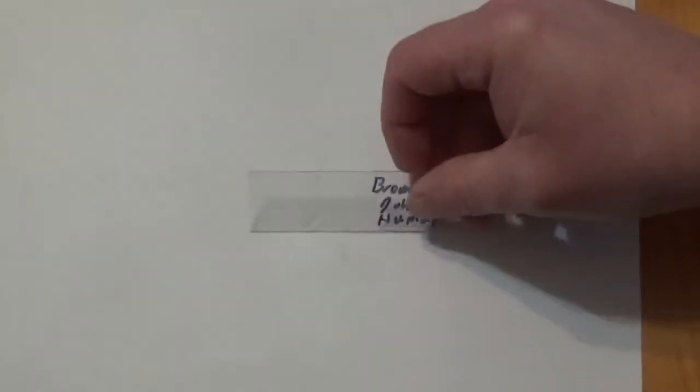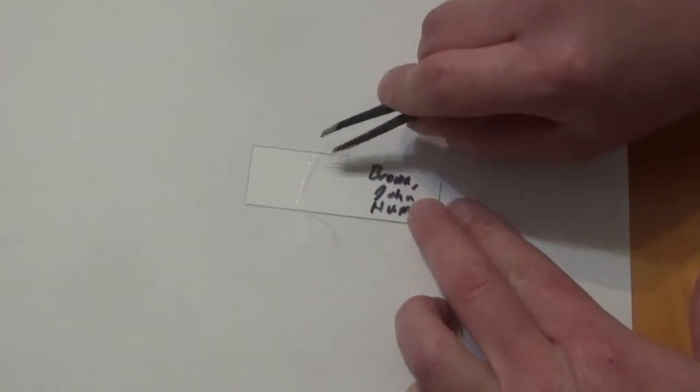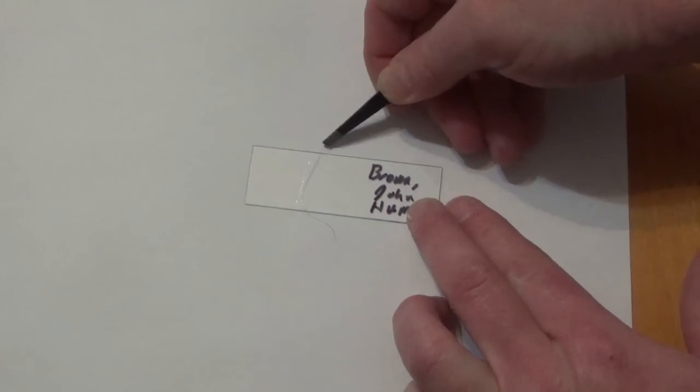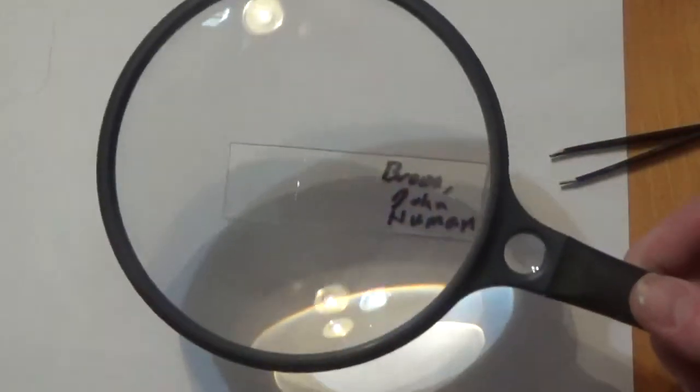Just like on the cooking shows, we have some prepared samples. So here is a sample of my hair, human hair. And you can see the nail polish is dried. So I'm just going to remove that hair. And let's see how well this picks this up. Hopefully you can see that.